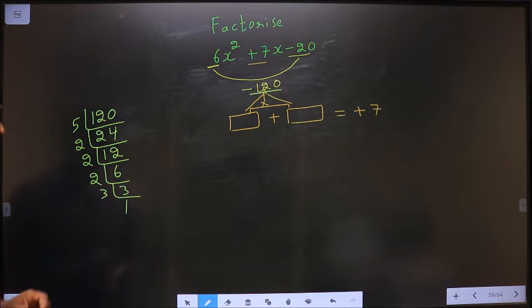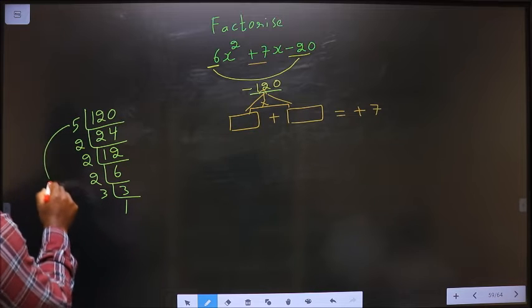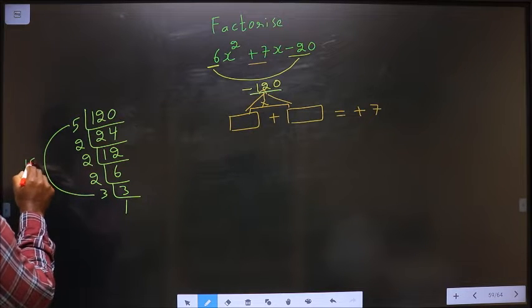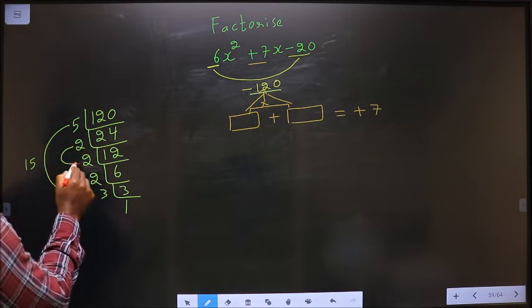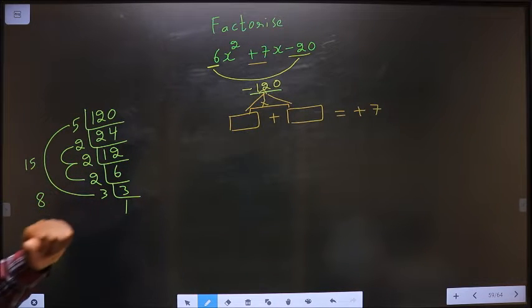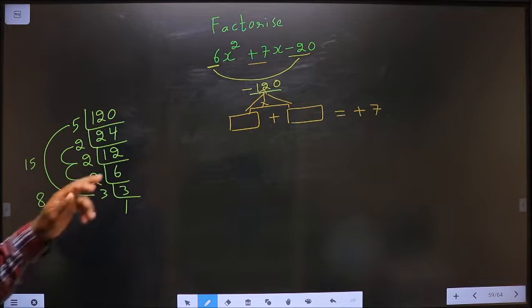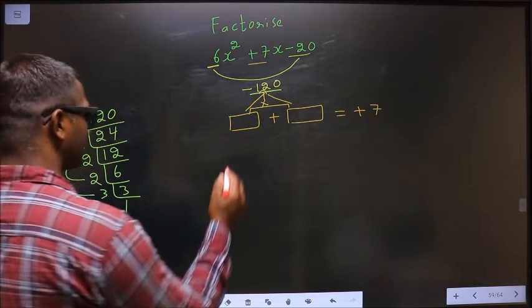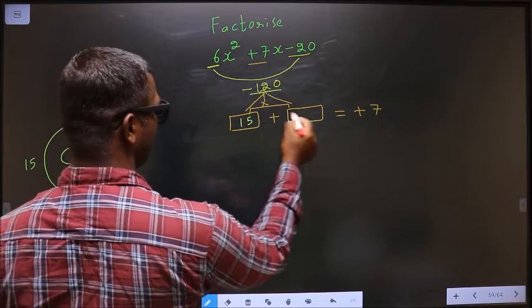I should get 7. So the two numbers are: 5 × 3 = 15, and 2 × 2 × 2 = 8. So 15 - 8 = 7, and 15 × 8 = 120. So the numbers are 15 and 8.